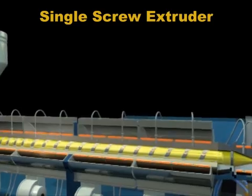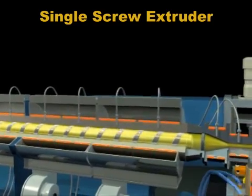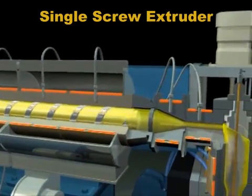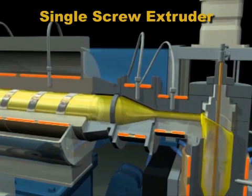In lesson one, you saw the single screw extruder. The screw rotates but does not move back and forth.